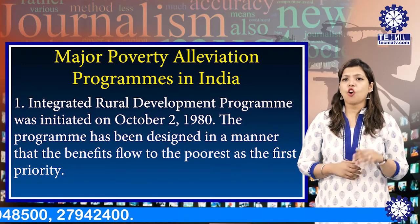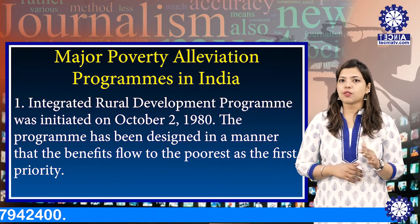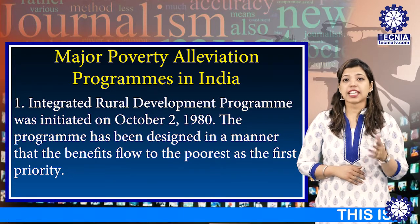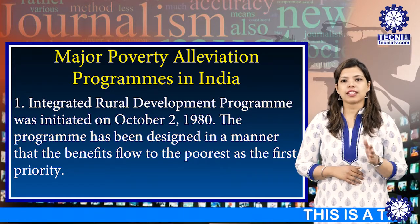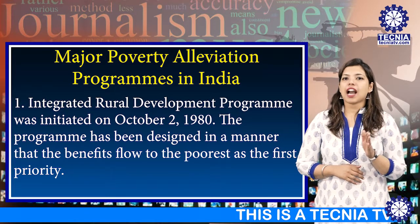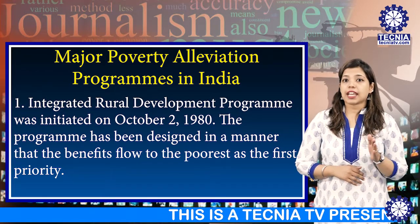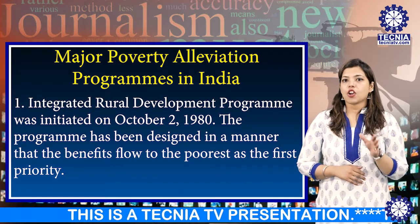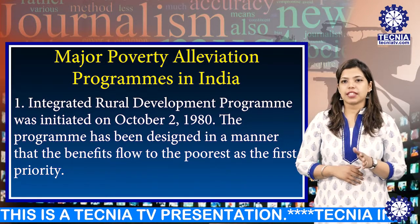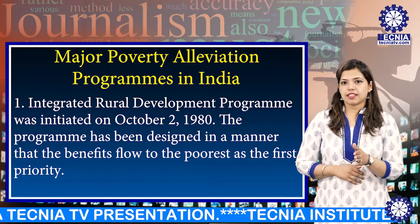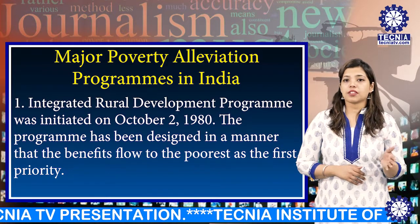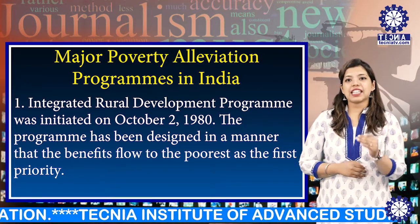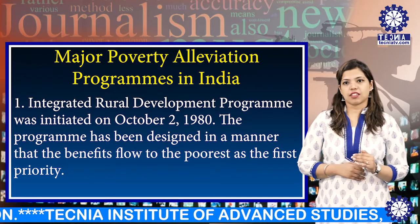Presently, all families having an annual income below Rs. 11,000 have been made eligible for assistance under IRDP. By the end of the 8th plan period, over 89 lakh families had been assisted. 50% of the beneficiary families were SC/ST. However, the target of assisting 40% women could not be achieved.